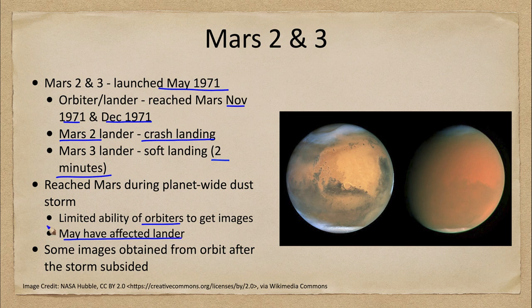The dust storm may have been part of what affected the lander for Mars 3, and may have been a problem as to why it was not able to last any longer than just those couple of minutes. Planning for the dust storm is not something we can predict — just like weather conditions here on Earth, we can make some predictions but other things will come up and cannot be exactly predicted.